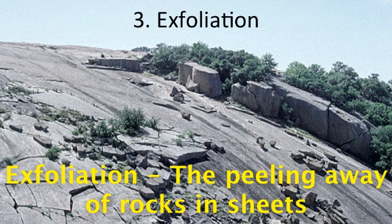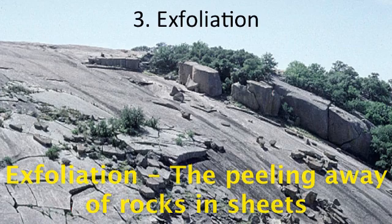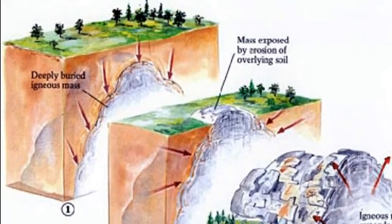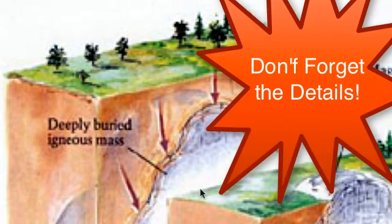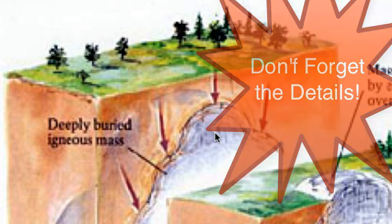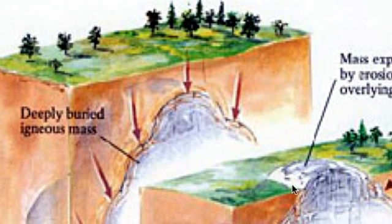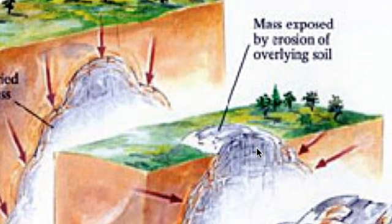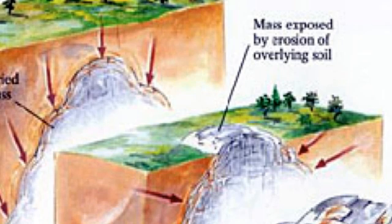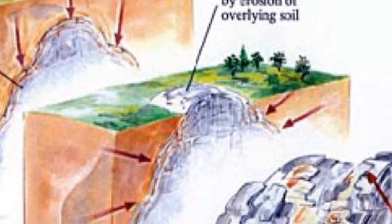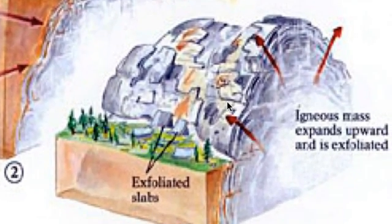The third type of mechanical weathering is exfoliation — similar to the peeling away of layers of skin. Exfoliation happens because of a release of pressure. Underground we have a large igneous formation, like a batholith or laccolith. Softer rocks on top get washed away, exposing the hardened magma chamber. That chamber has been compressed for a very long time, and once the overlying pressure is gone, it expands outward and causes rocks to peel away in layers — that's exfoliation.